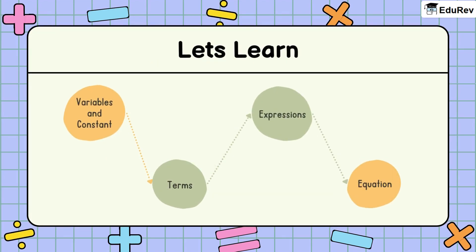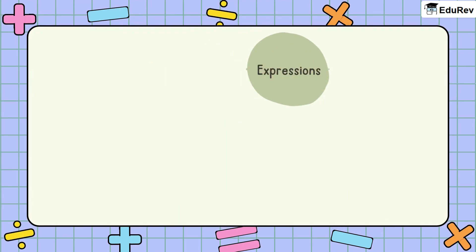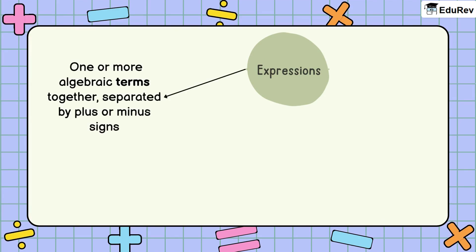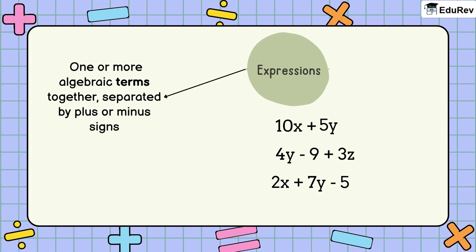Now, what are algebraic expressions? When we write one or more algebraic terms together, separated by the operations of plus or minus, it becomes an algebraic expression. For example, 10X plus 5Y, 4Y minus 9 plus 3Z, 2X plus 7Y minus 5, etc. are all algebraic expressions.